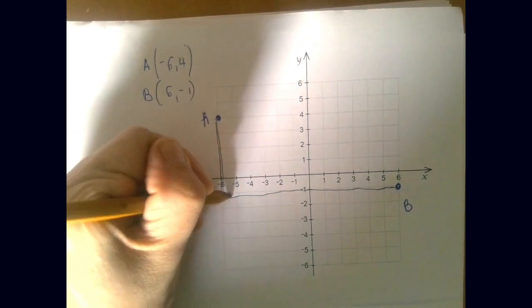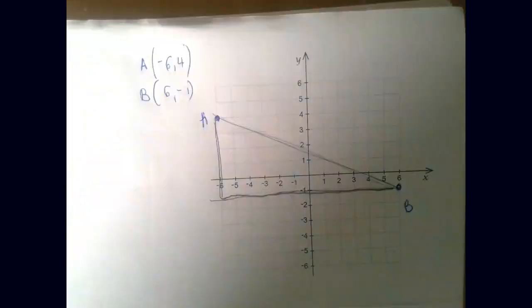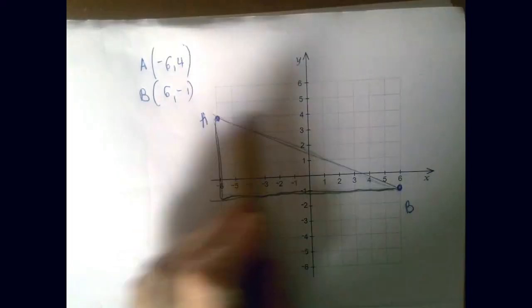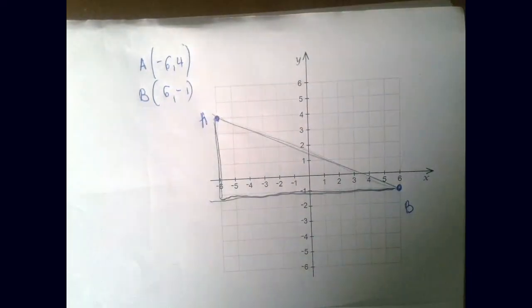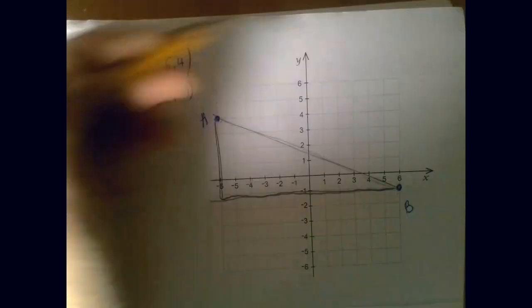So we're going to connect A and B with a horizontal and a vertical line, thereby creating a right triangle. There are always two ways—we could have gone this way, too. We could go vertical first and then horizontal, or horizontal first and vertical. Obviously, the two triangles would be identical, so the answer would be the same.